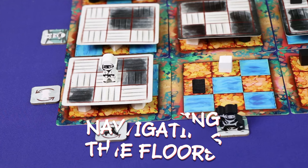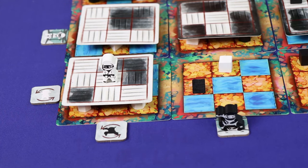The second and major phase of your turn is navigating the floors. There are four different actions you can take during this phase.